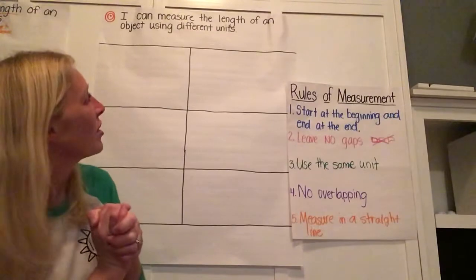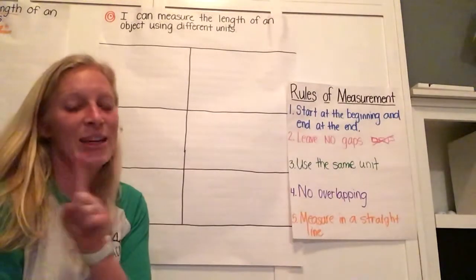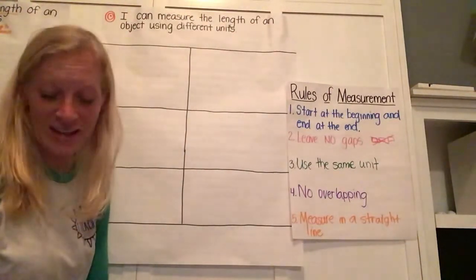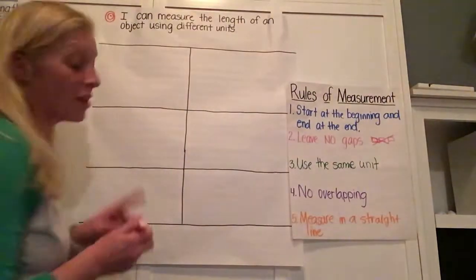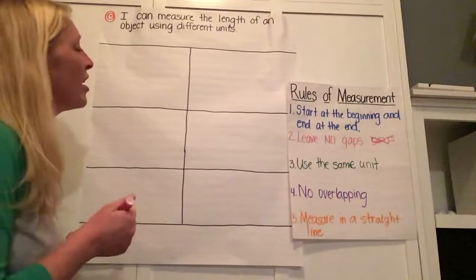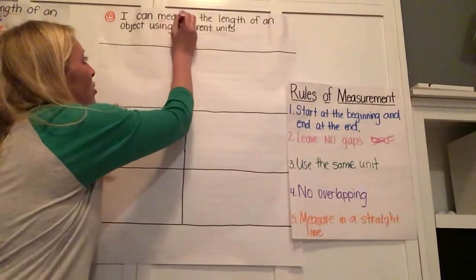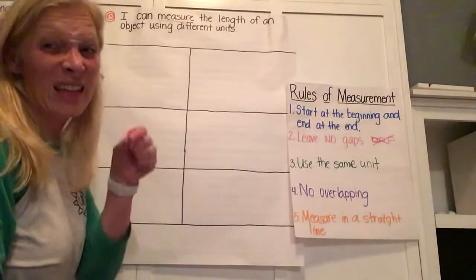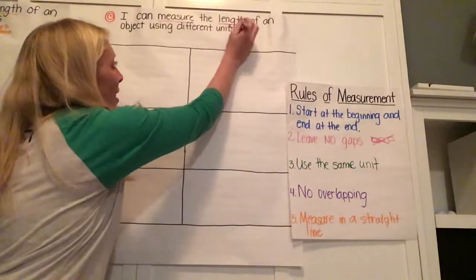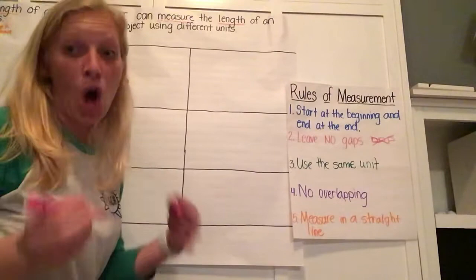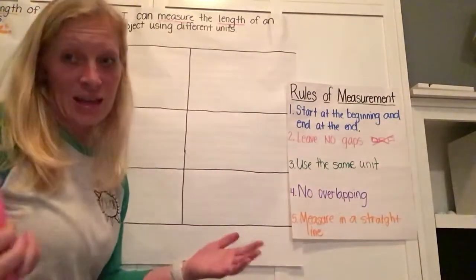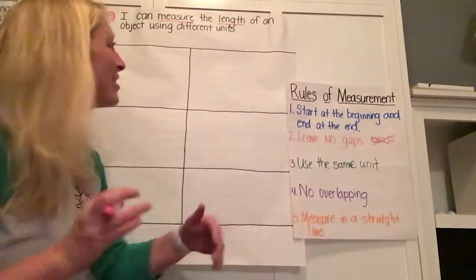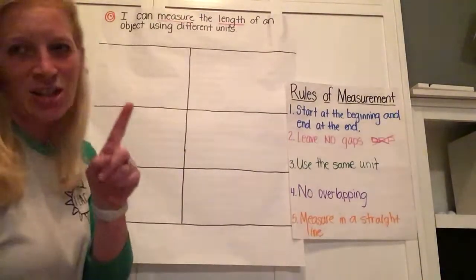I can measure the length of an object using different units. Now, some of my second graders were giving me all these fantastic ideas of things we can use to measure. But before we do that, let's pick apart our learning target. When we're measuring something, we're asking ourself, how big is it? How much is it? But specifically, our learning today is about the length of something — how long is it. We don't want to know how much it weighs. We want to know how long it is. We're going to measure that object more than one time.